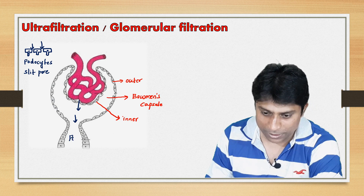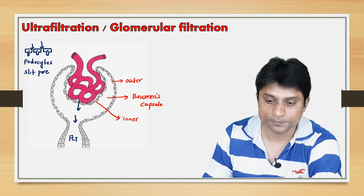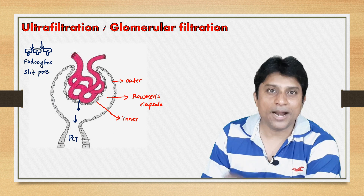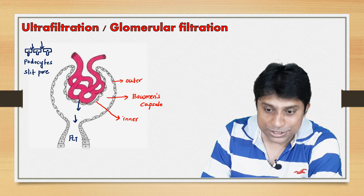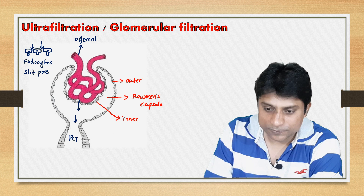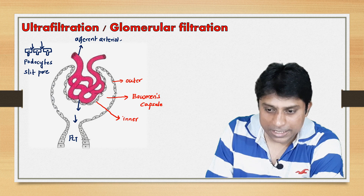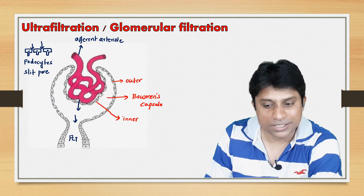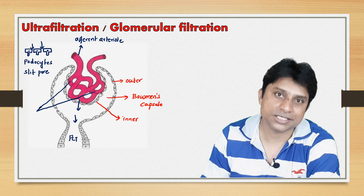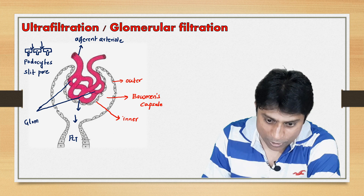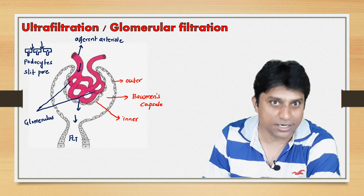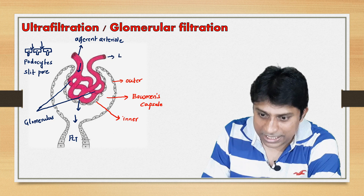The tubular part starts with the proximal convoluted tubule. Along with this Bowman's capsule, a branch of the renal artery called the afferent arteriole enters inside the lumen of the cup and divides into a network of capillaries. This network of capillaries is called the glomerulus. Remember, the glomerulus is formed from the afferent arteriole and leaves as the efferent arteriole.